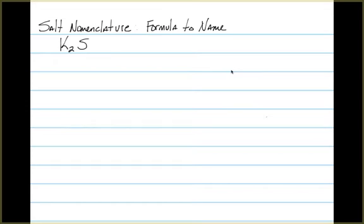The first example here is going to be K2S. Nomenclature going from formula to name is pretty straightforward for these compounds. We simply look at the names of the elements that are involved and write their names out in order of the elements that occur in the compound formula. So potassium comes first, sulfur comes second, and we've changed the ending for the sulfur to -ide.